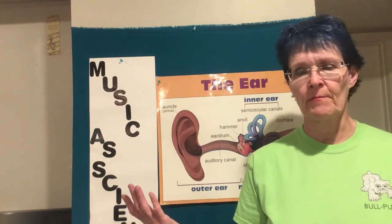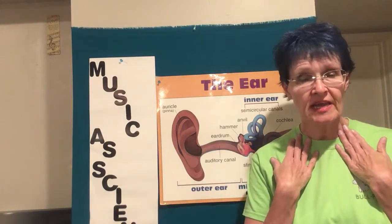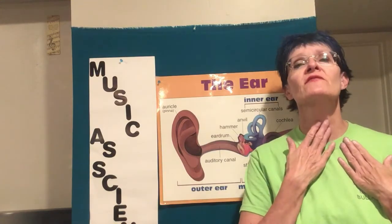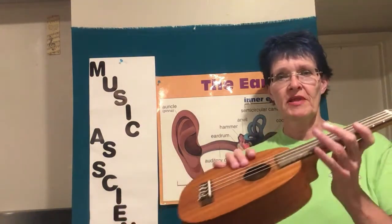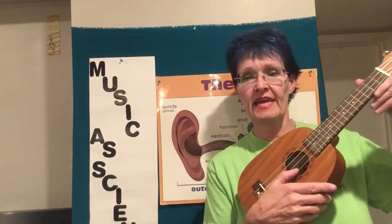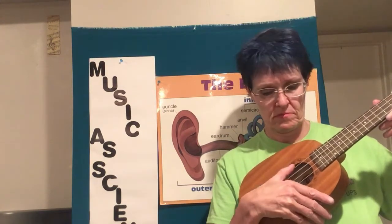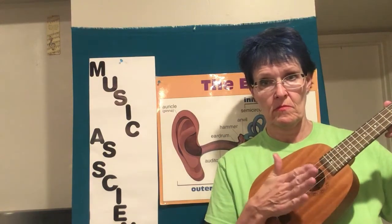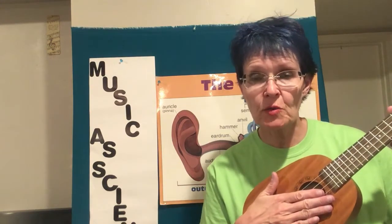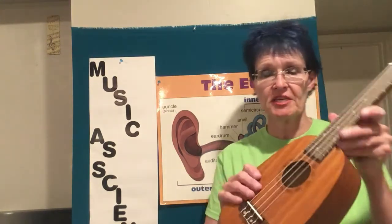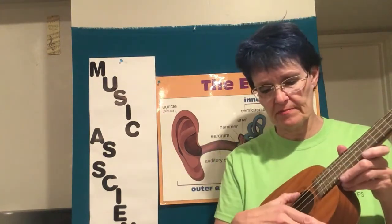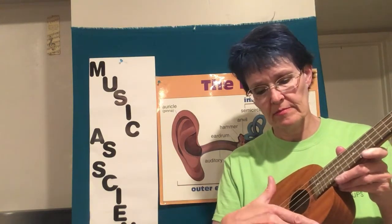Sound is a wave that travels from the object that is vibrating to a receptor. How many things can we think of that make sound? The source of our sound when we're singing is our vocal folds. If I play the ukulele, the source of the sound is that string vibrating. When the sound goes away — when I put my hand against the string — it's because I have stopped the vibration. The vibration stops. Sound is a vibration.